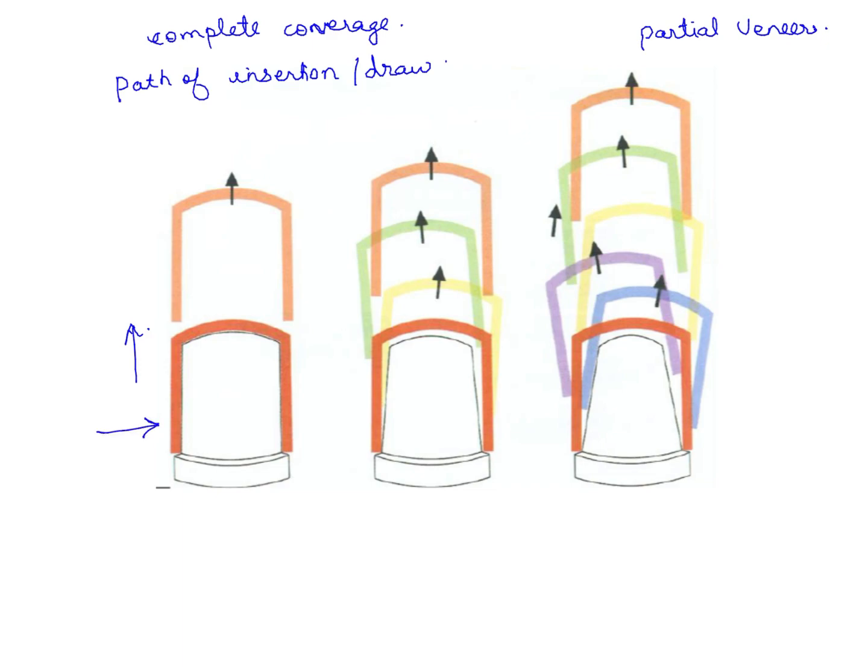Although here the taper is minimal and surface area is more, the path of draw is parallel to the long axis. This is ideal in full coverage restorations, not in partial coverage. In partial coverage you need additional retention form, and you provide proximal grooves to limit this kind of movement where the restoration is going to pop out.